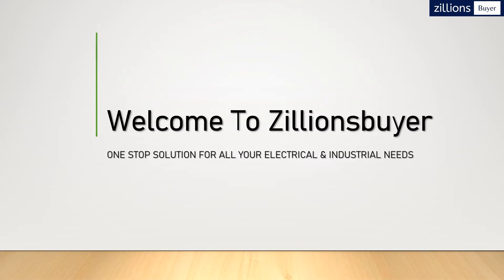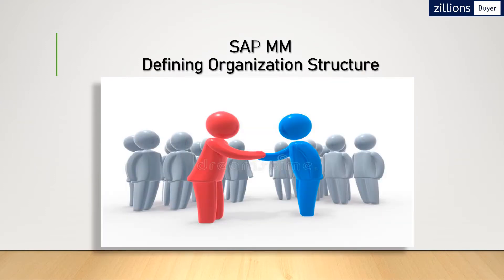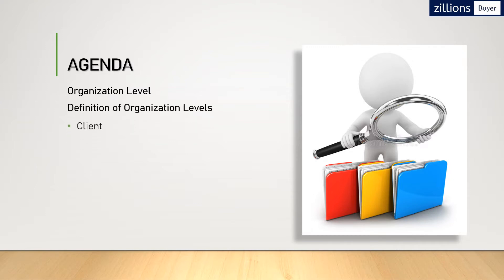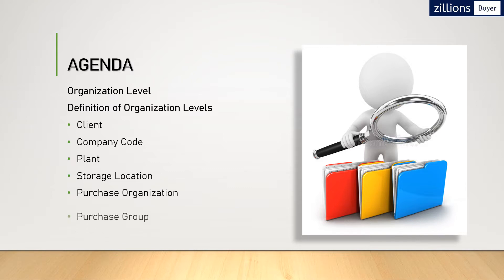Today's topic is defining organization structure in SAP MM. In SAP MM software, we will define what organization structure is. Let's start with the agenda: we will go step by step through the organization levels — client, company code, plant, storage location, purchase organization, and purchase group.